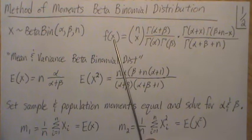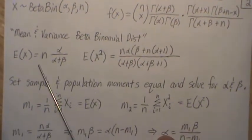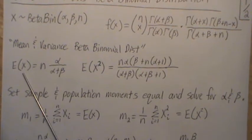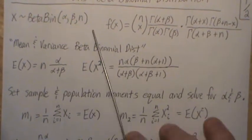The support of x is from 0 to n. And in that video, we derive the mean and the second moment of this random variable.